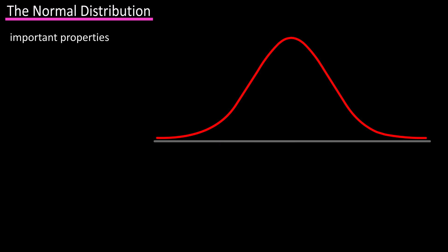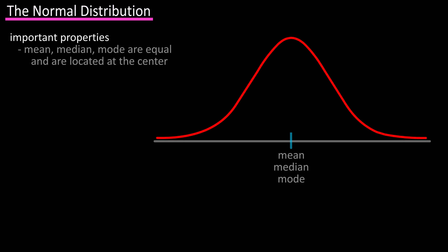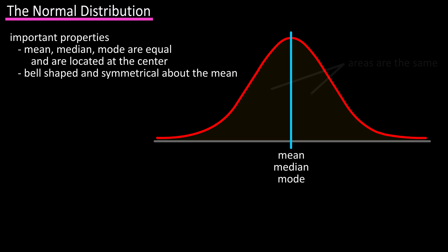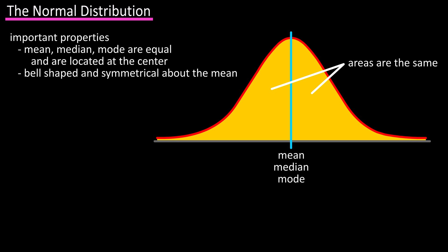There are some important properties of a normal distribution. Number one is that the mean, median, and mode are equal, and are located at the center of the distribution. Number two, its curve is bell-shaped and symmetric about the mean, so if we draw a line down the middle, the shape and area is the same on both sides.